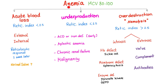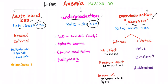Normocytic anemia has MCV 80 to 100, and there are three main causes: acute blood loss, underproduction, or over-destruction — meaning hemolysis, increased destruction. In acute blood loss as well as underproduction, the reticulocyte index is less than 2.5. The reticulocyte index is a doubly corrected reticulocyte count. However, in hemolysis, the reticulocyte index is more than 2.5 — there are a lot of reticulocytes.